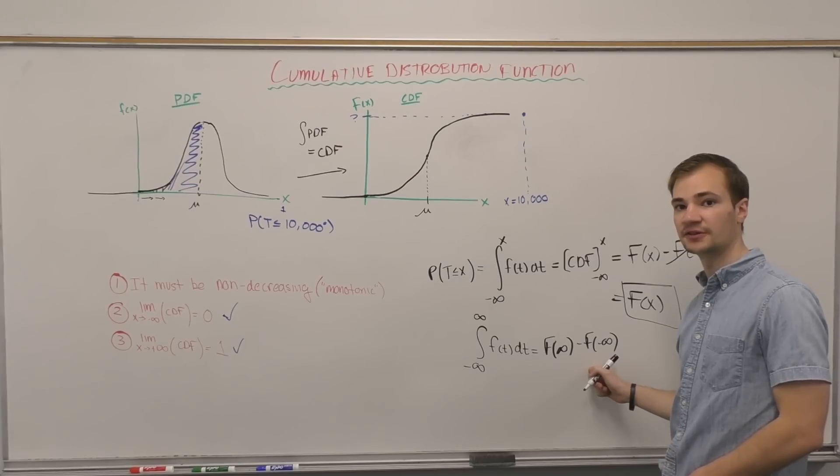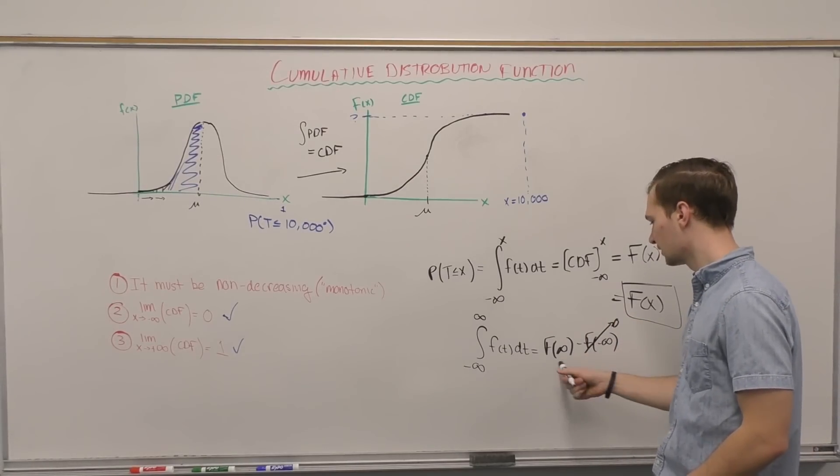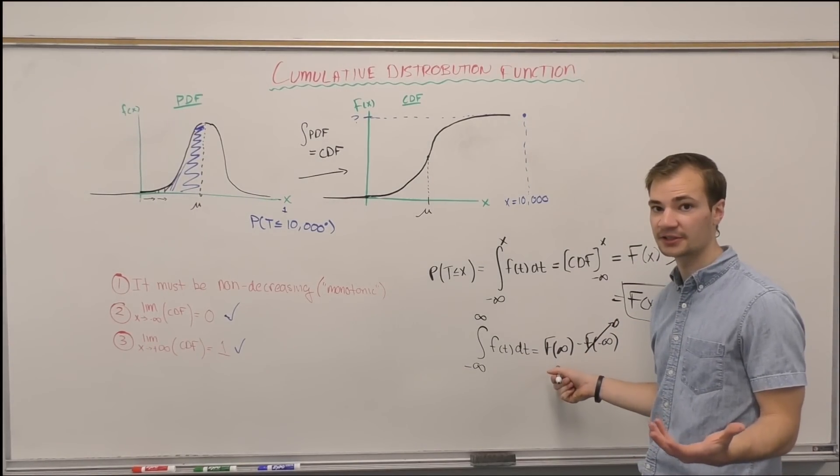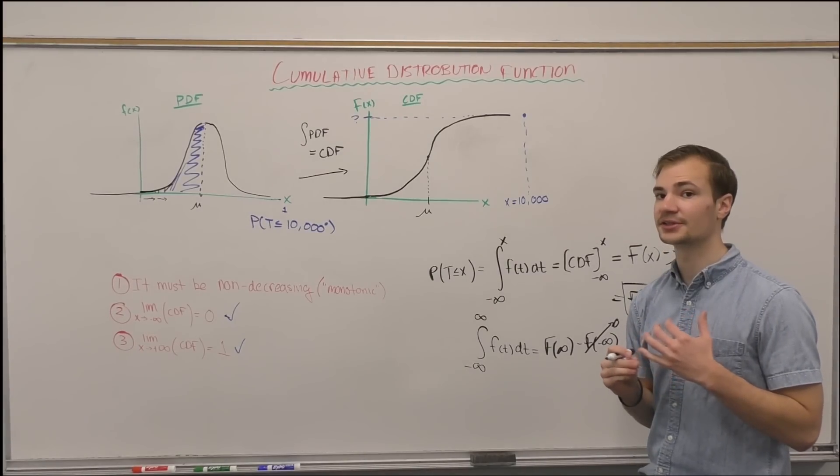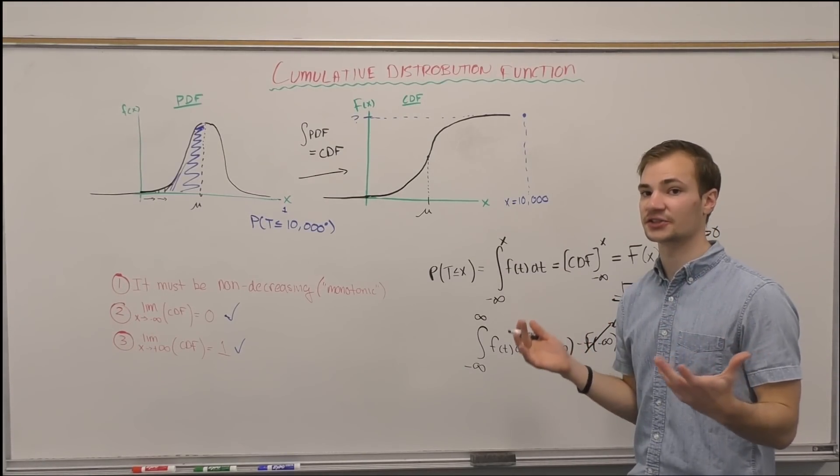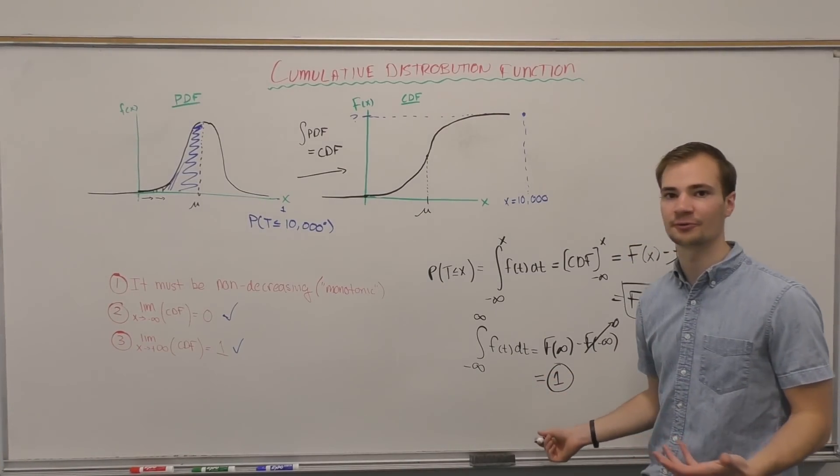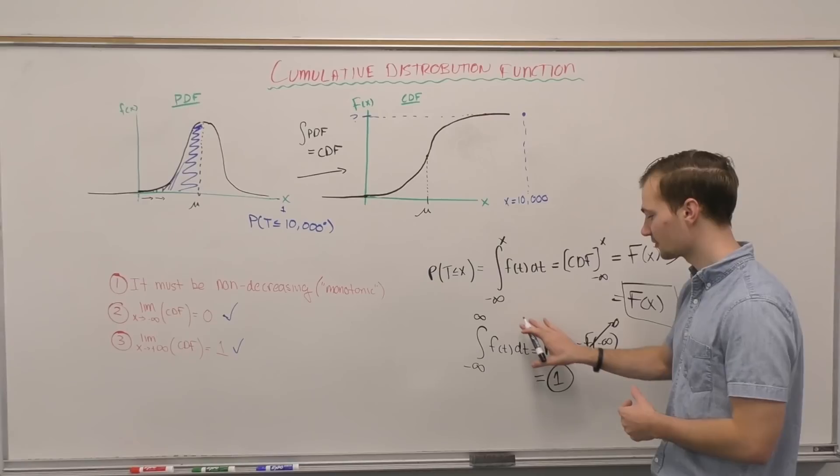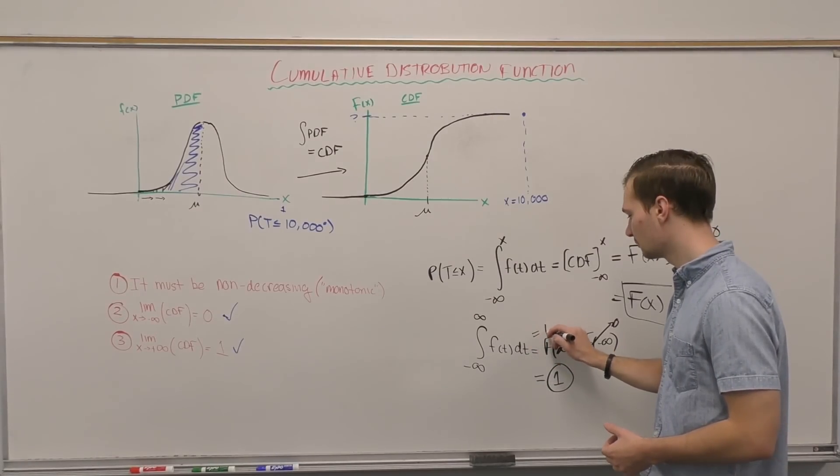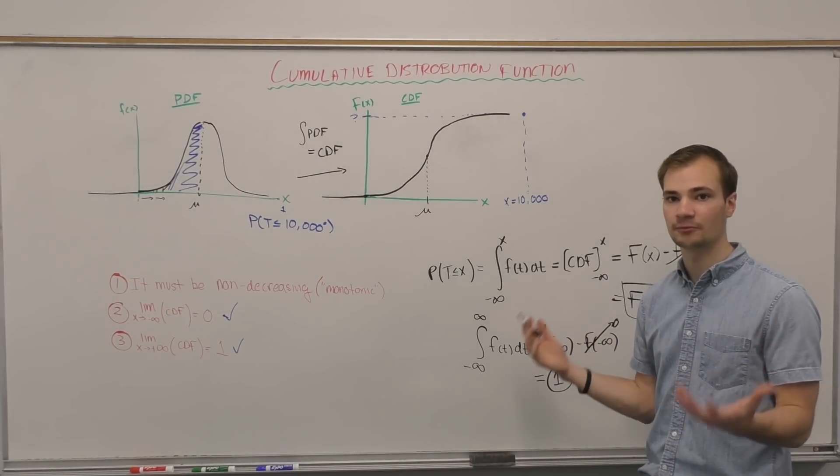We already know that f of negative infinity is zero. f of positive infinity, in other words, the probability of all events occurring, is of course equal to one. One hundred percent chance of it all occurring. So this will always equal one.